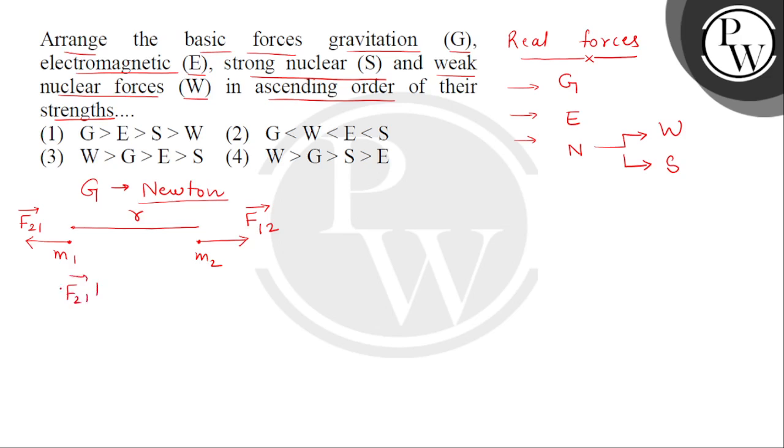And magnitude is G times M1 times M2 divided by R square. Now, this G is the gravitational constant which will be constant for any pair in the entire universe. Its value is 6.67 multiplied by 10 to the power minus 11 newton meter square per kg square.